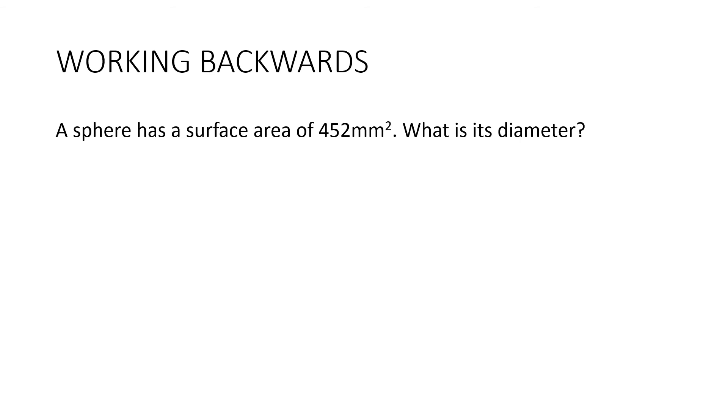Here's an example. A sphere has a surface area of 452 millimetres squared. What is its diameter? So in this case, we're going to have to work backwards. Let's have a look. Here's the formula. A is equal to 4πr². We don't know r. Instead, we know A. So it's going to go in here.